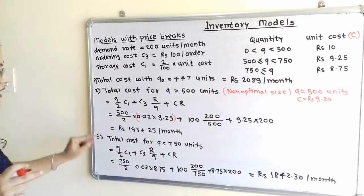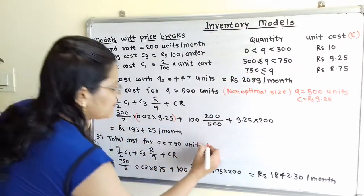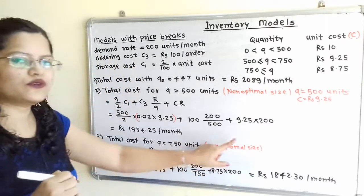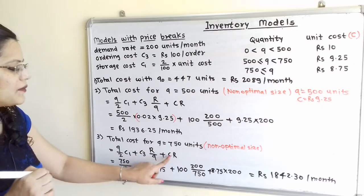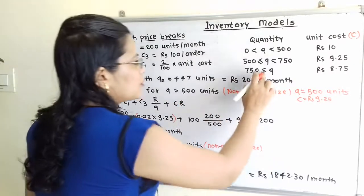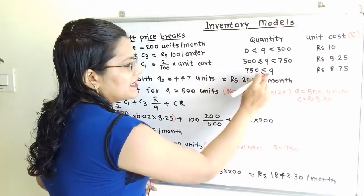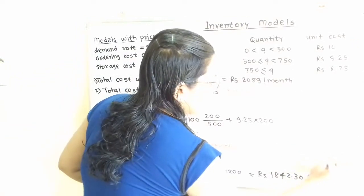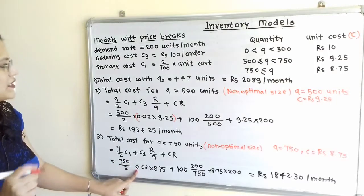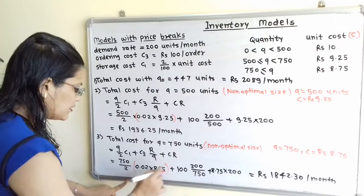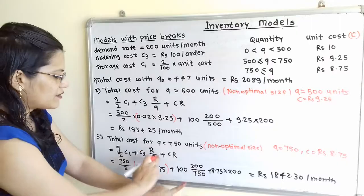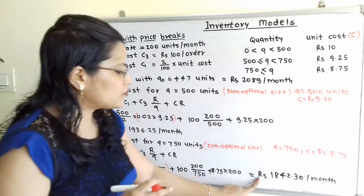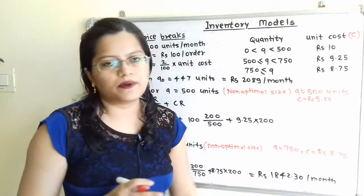Total cost for non-optimal lot size Q = 750, using the same formula. When Q = 750, the applicable unit cost C = Rs.8.75. Substituting: (750/2) × 0.02 × 8.75 + (100 × 200 / 750) + 8.75 × 200 = Rs.1842.30 per month.